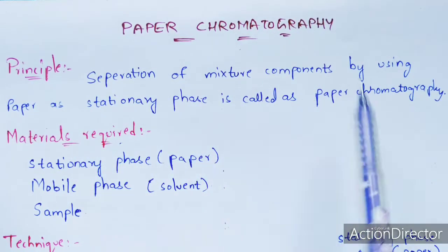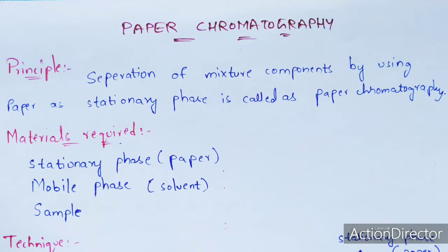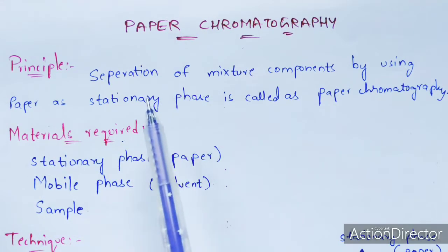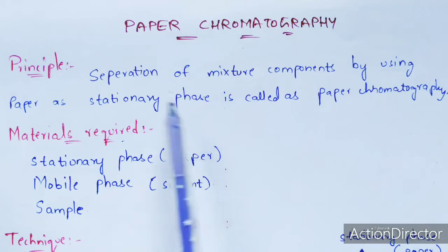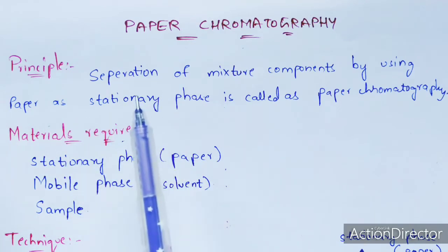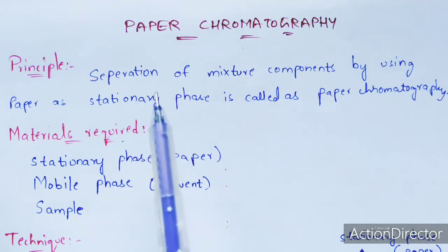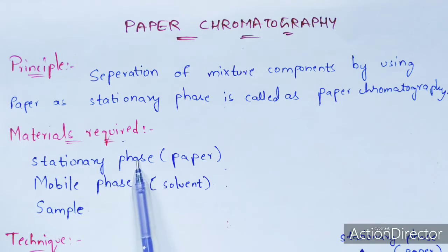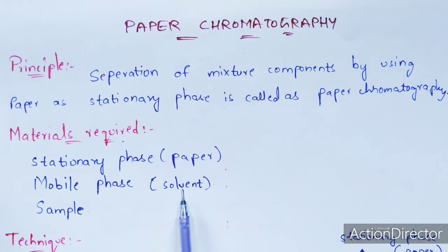In every chromatography technique, a stationary phase and a mobile phase are present. In paper chromatography, the stationary phase is paper. The mobile phase is a solvent, which is similar across most chromatography techniques. The main materials required are: stationary phase (paper), mobile phase (solvent), and the sample.